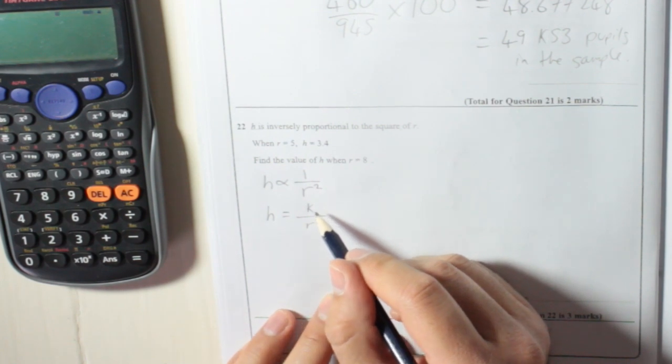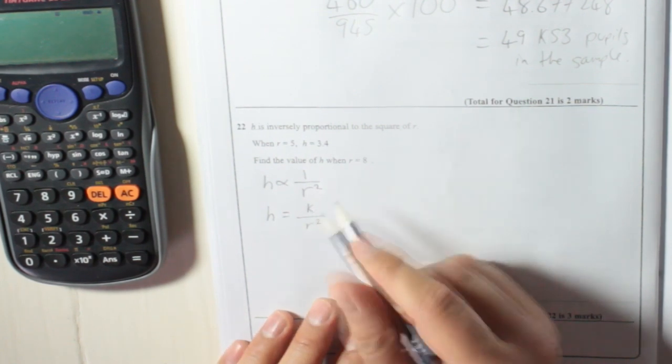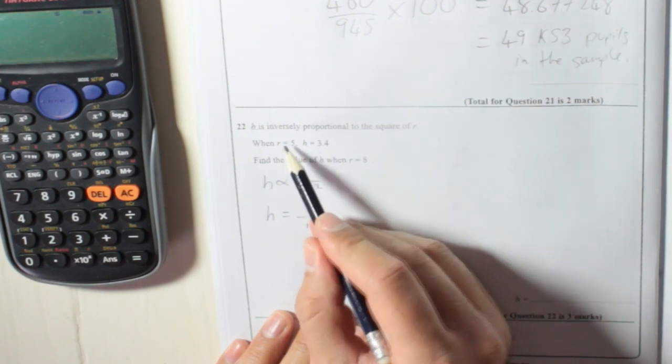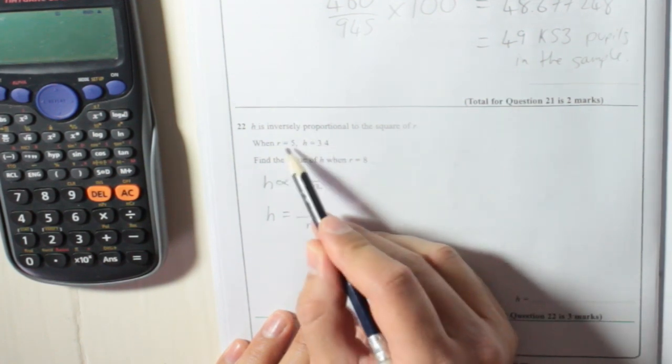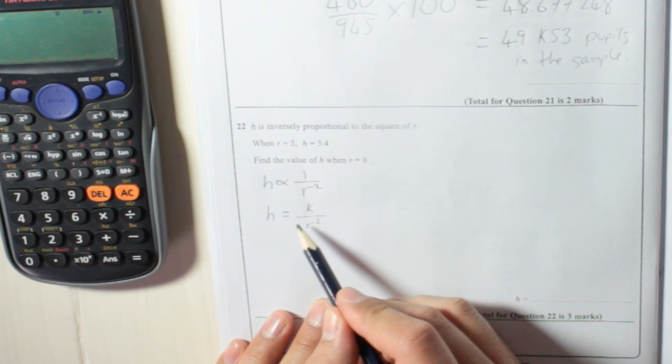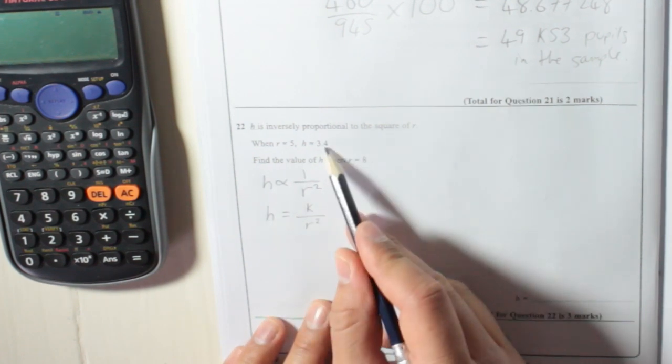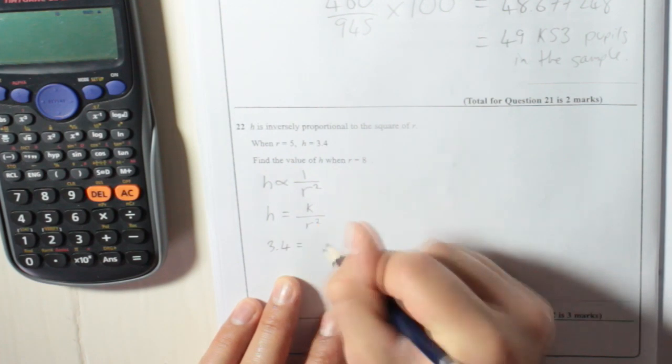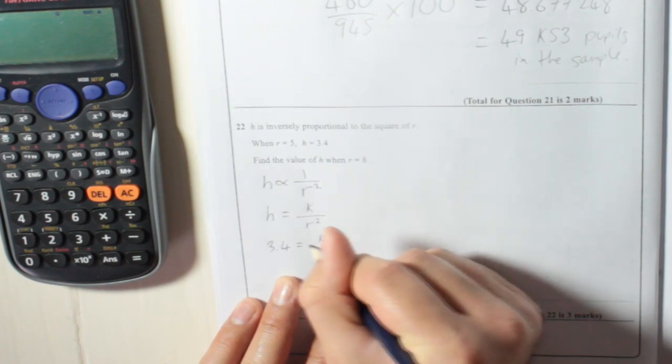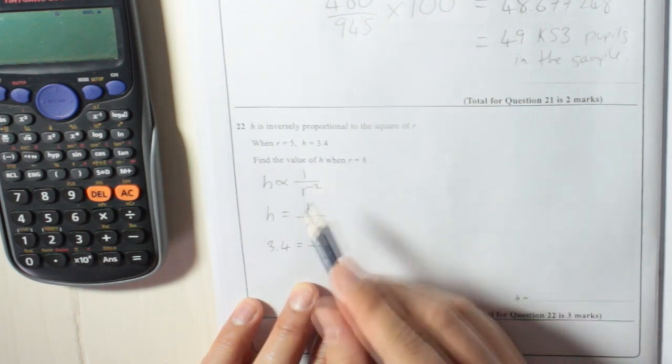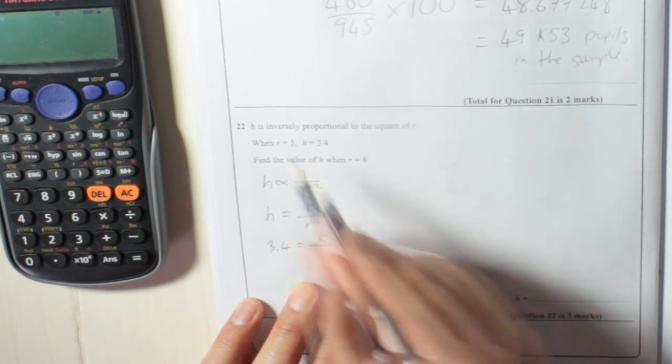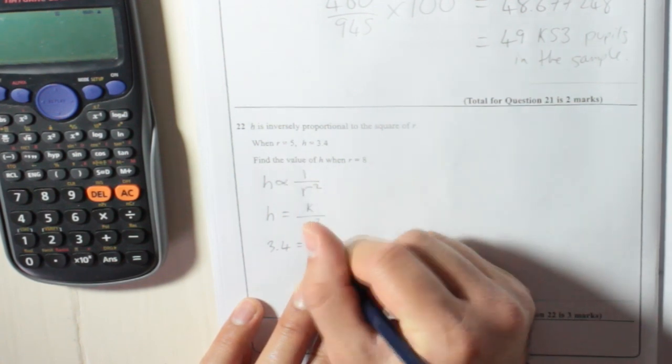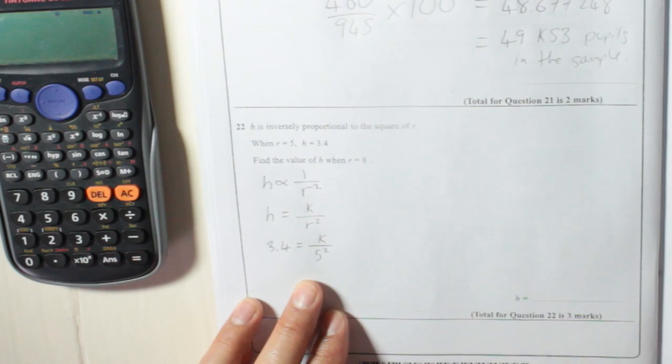The way you work out what k is, is by putting the values of r and h that the question gives us into this formula. So h is 3.4, so I'm going to write 3.4 is equal to k over r squared. So r is 5, so 5 times 5 is 25.